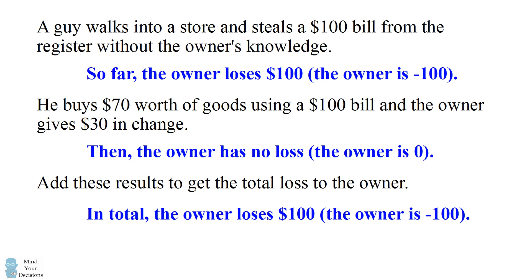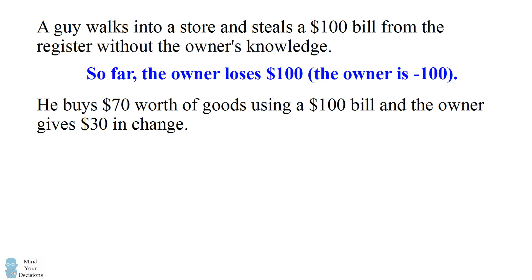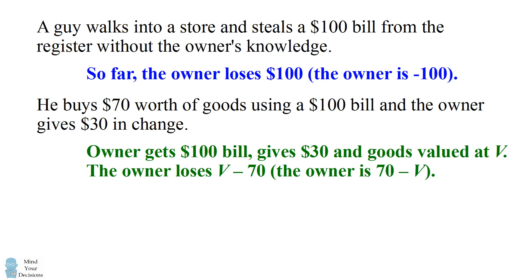Now there's one technicality if you want to really overthink this problem and go into the accounting details. When someone buys $70 worth of goods in a store, it's not because the goods are worth $70 to the owner. What happens is the owner is getting a $100 bill and gives back $30 in change, but the goods have some value V. This is usually going to be less than $70. So you could say the owner is actually losing the value of the goods, but then getting a net of $70 because it's the $100 bill minus the $30 in change. So here the owner loses V minus 70.